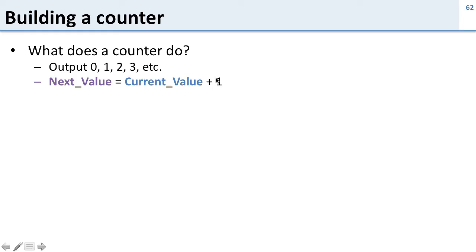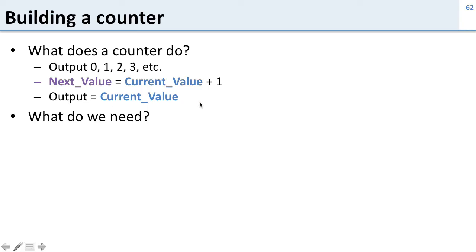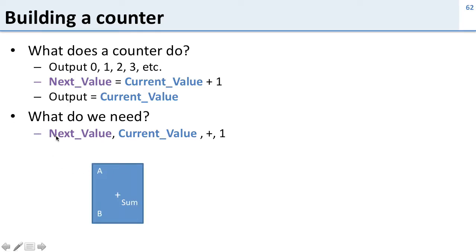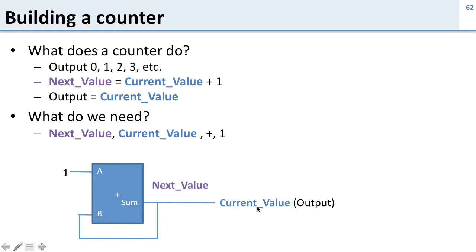We've got two wires, an adder, and a 1. Our output is just the current value. We need a next value, a current value, an adder, and a 1. Here's our adder taking inputs A and B and generating a sum. The next value is the output, with a 1 going into the adder. We feed the result back around — so our next value is current value plus 1. But this is a little confusing: next value and current value appear to be the same wire.